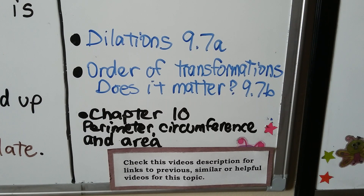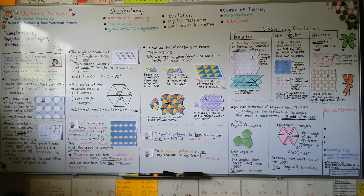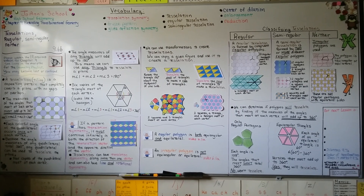The next lesson covers dilations — including drawing one with a compass and in the coordinate plane. After that, we'll discuss the order of transformations and whether it matters to reflect or rotate first. To summarize: angles at each vertex must add up to 360 degrees for a tessellation. Regular tessellations use congruent regular polygons; semi-regular use two or more different regular polygons; and neither uses irregular polygons.